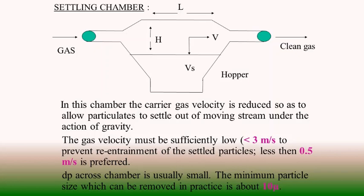Settling chambers are provided to settle down the dust particles in a flowing gas by sudden change in volumetric flow. With respect to dust-laden gas, a change in volume creates a change in velocity, and that causes the separation of dust from the flowing gas. The gas velocity must be sufficiently low while flowing through the settling chamber — below 3 meters per second is necessary for prevention of re-entrainment of the settled particle, and less than 0.5 meters per second is preferred.